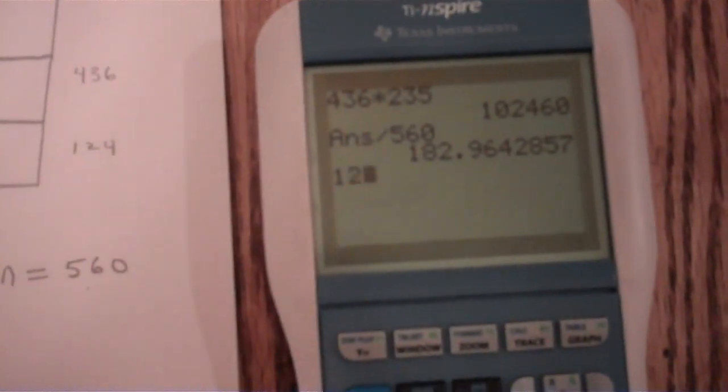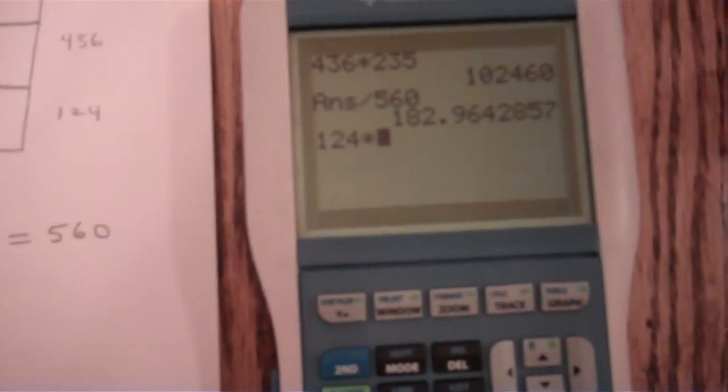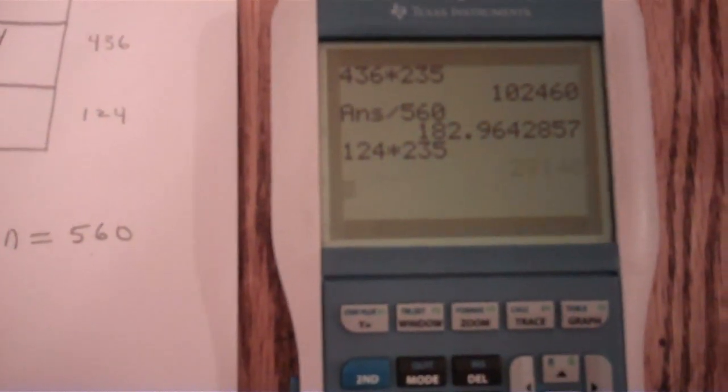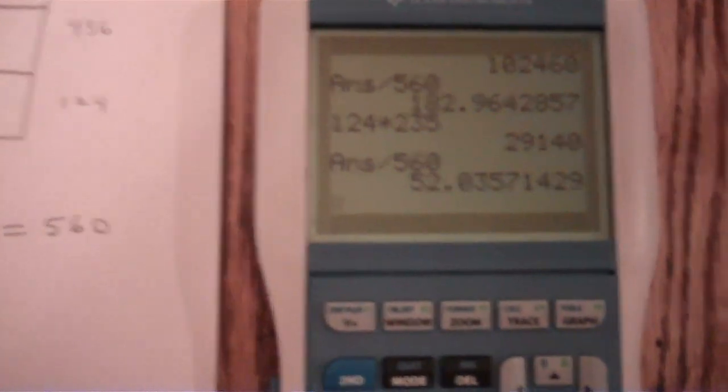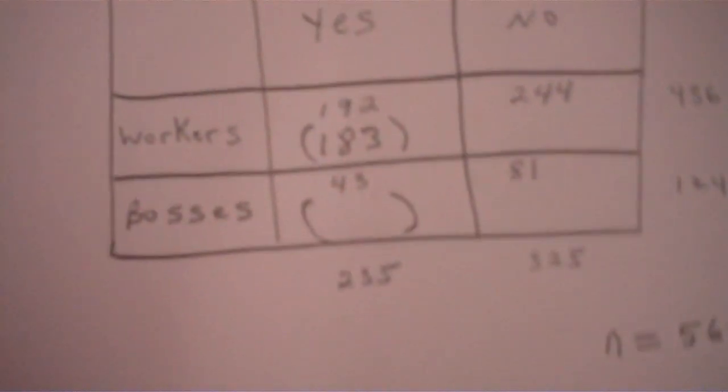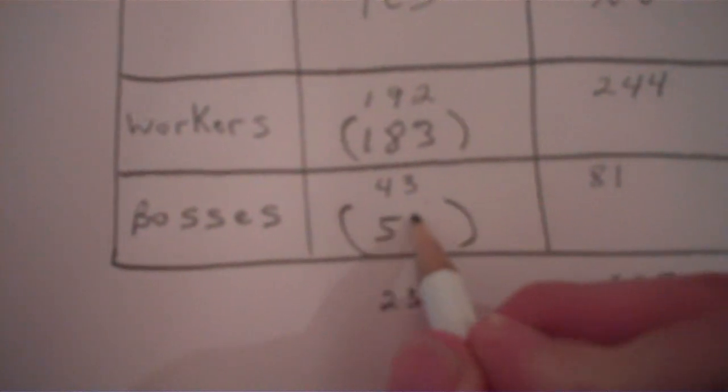And again, we're going to take 124 times 235, enter, divided by 560, and we get 52. So we're going to come back over here, put in 52.